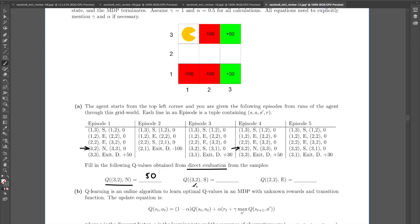Okay, what about this one? Q of 3, 2, s. Where does it appear? So here's one place. And here is also one place. In both of these cases, the future reward is 0 plus 30, which is 30. So the average of both of those is 30.